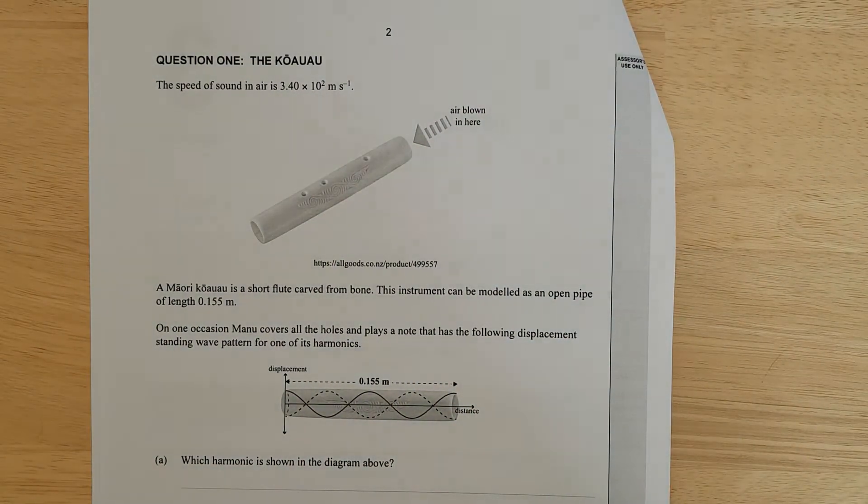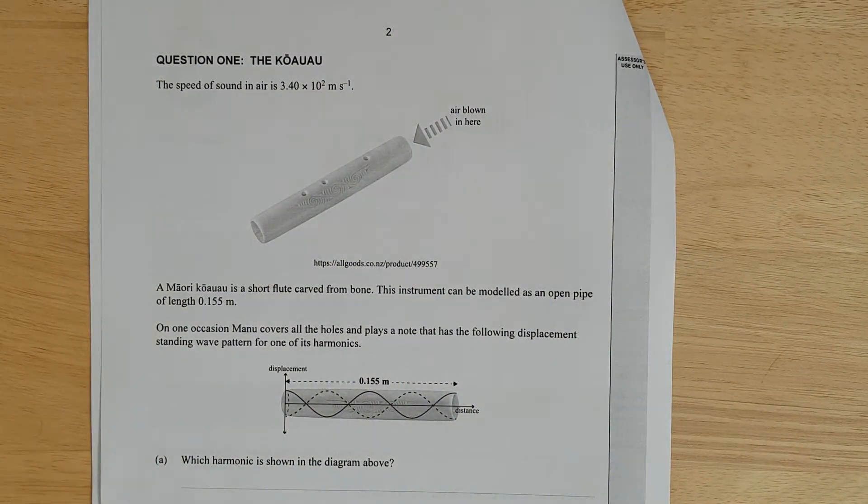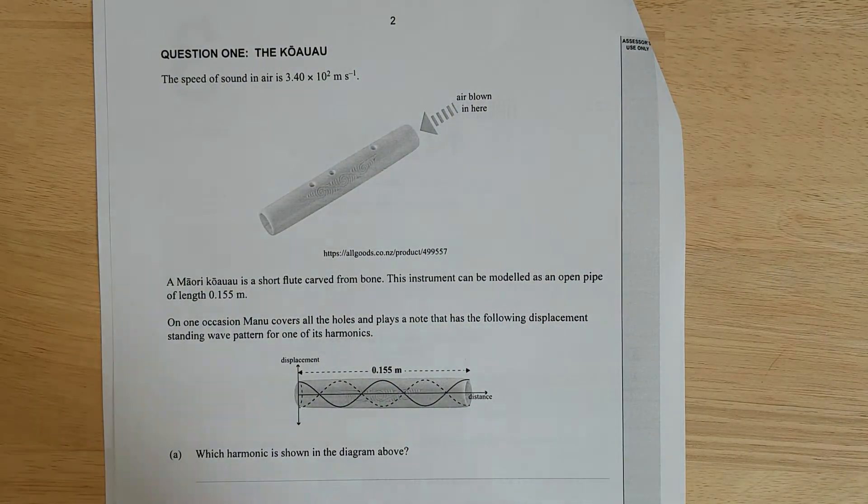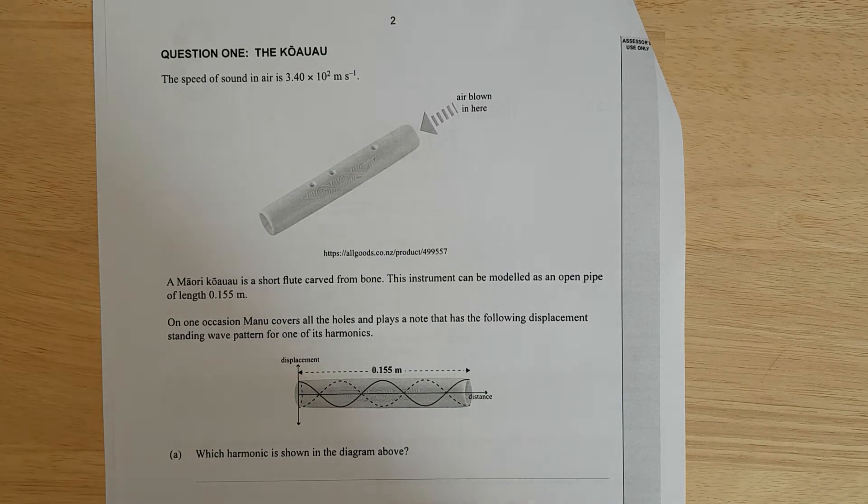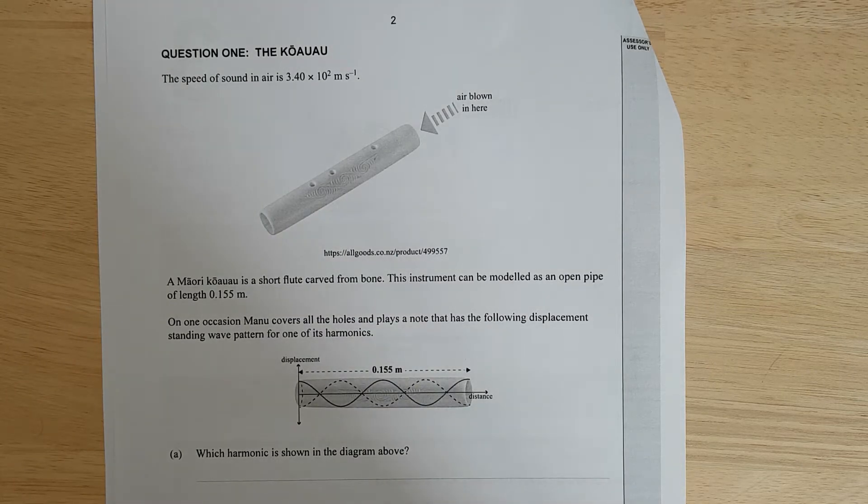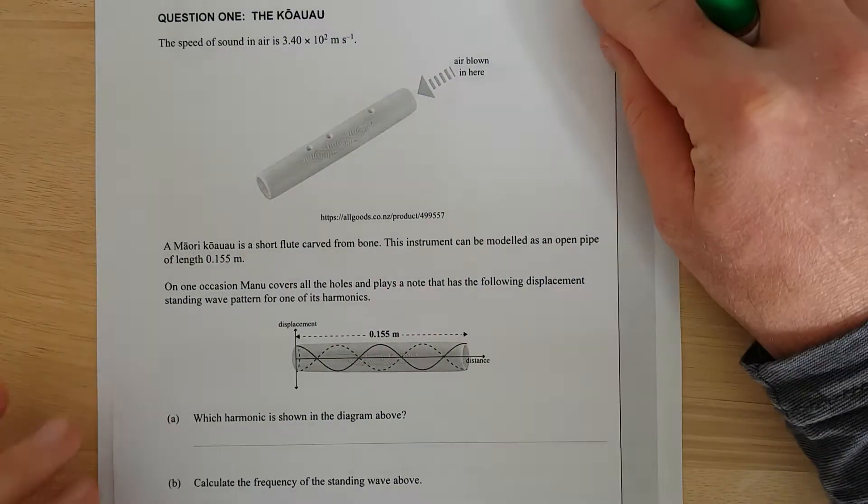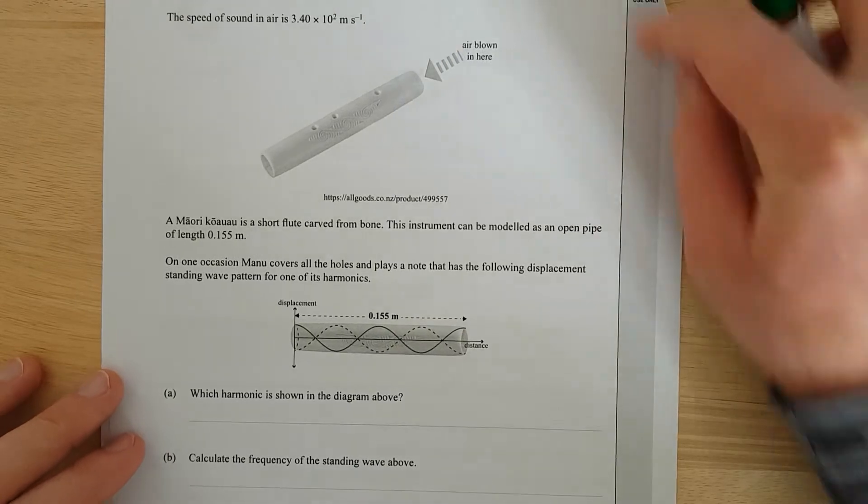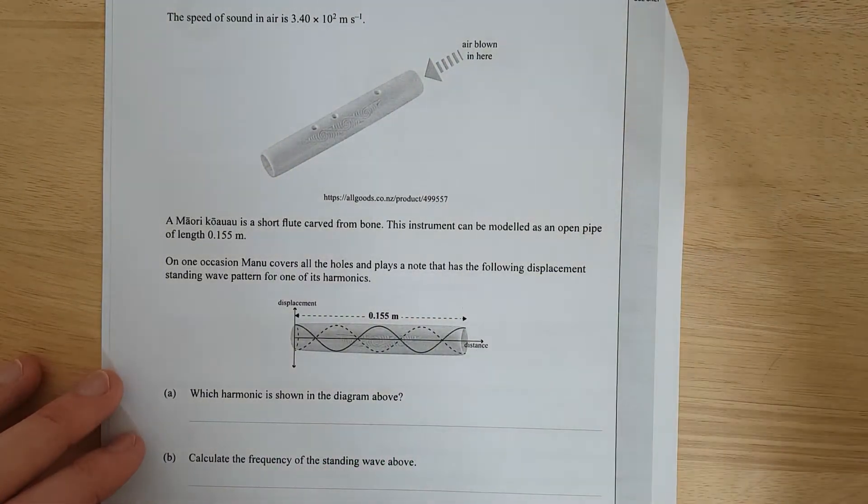The speed of sound in air is 340 metres per second. A Maori kāraura is a short flute carved from bone. This instrument can be modelled as an open pipe of length 0.155 metre. On one occasion Manu covers all the holes and plays a note. There is the following displacement standing wave pattern for one of its harmonics. What is the harmonic of the diagram shown above?